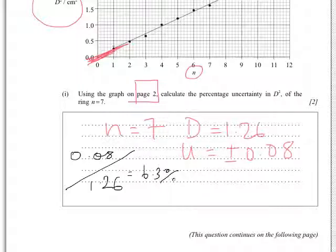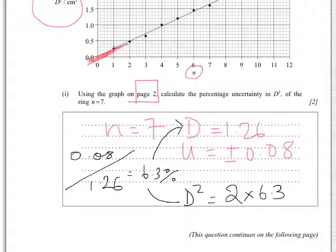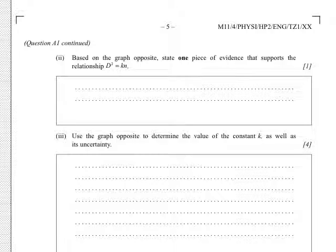Part B, which we've already done: on the graph opposite, draw the line of best fit for the data points. And part C, we're going to ignore, because it involves an analysis using logarithms, which we'll play with next year. So you can ignore this part of the question. Let's go on to the next section.